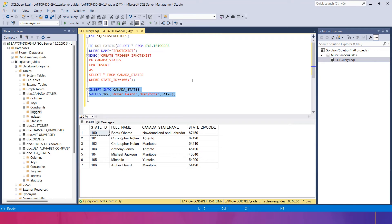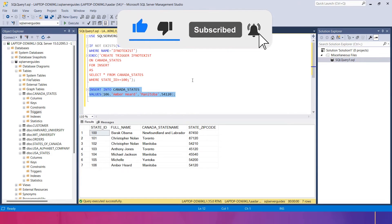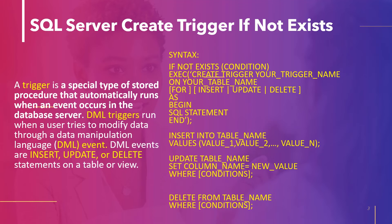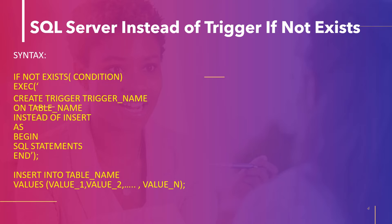Before moving to the next topic, please like, share, and subscribe to our channel so we can move forward. Next, I'm going to use the INSTEAD OF trigger with IF NOT EXISTS. As we know, the INSTEAD OF trigger will skip the DML statement execution — it will not make any effect on the table. The execution of the INSERT or DELETE statements runs only logically, but the table is not affected because of the INSTEAD OF trigger. If we had used an AFTER trigger instead, it would show a drastic change inside the table.